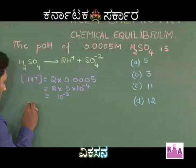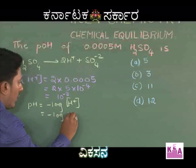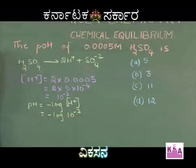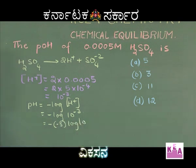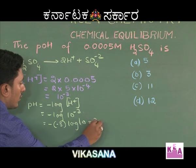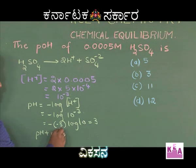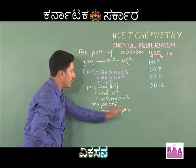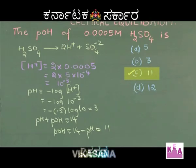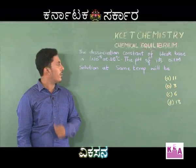Using this, pH = −log[H⁺] = −log(10⁻³) = −(−3)·log(10) = 3. They have asked for pOH, and using pH + pOH = 14, pOH = 14 − 3 = 11. Hence option C is the right answer.